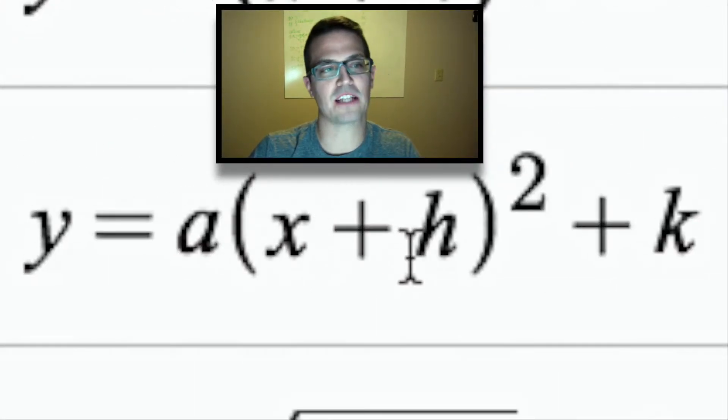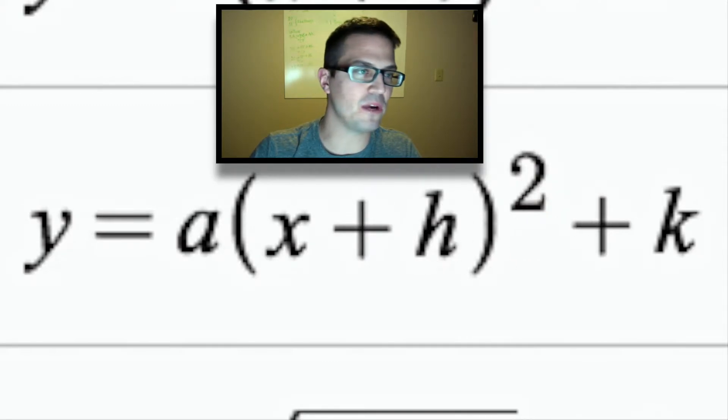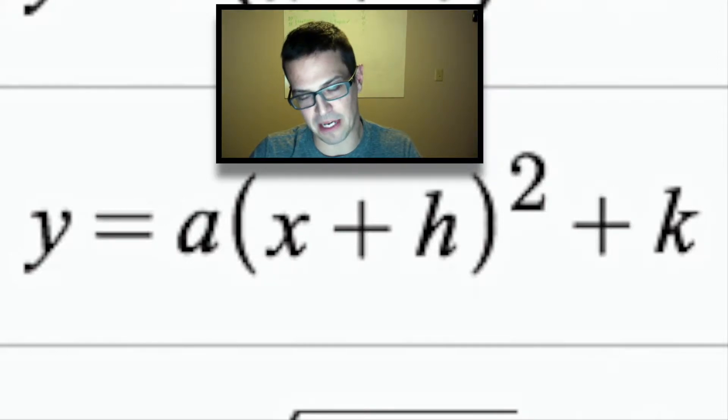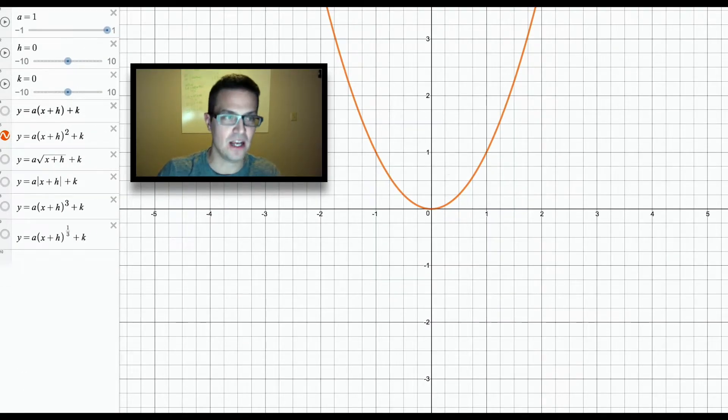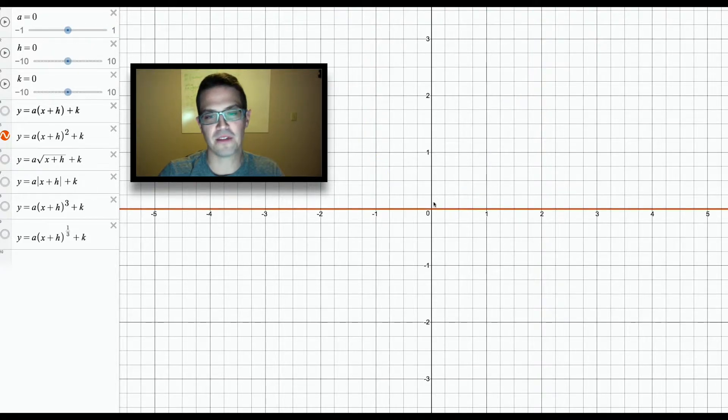So we have this a parentheses x plus h in parentheses squared plus k, and we're going to see what happens with this a, this h, and this k, and how it basically transforms this parent function. As it is right now on the screen, this is a parent function. So first thing I'm going to do is change my a value. I'm only going to be primarily focusing on the a values of negative one and one for this video. Basically, it would just either expand out the function or it would compress the function. But for this one in particular, I'm just going to be focusing on one and negative one. If I actually went to zero, it would just flatline this entire graph right here, so it's actually not quadratic anymore. Based on the definition of quadratic, this would not be that way, because it's just y equals zero. So we are not going to be using zero.